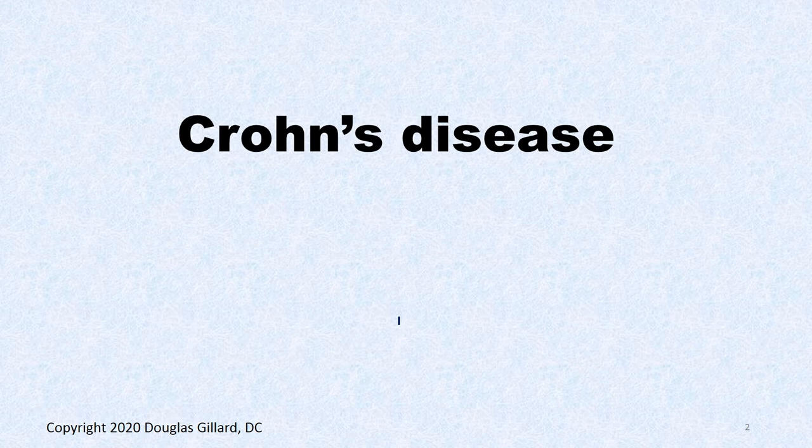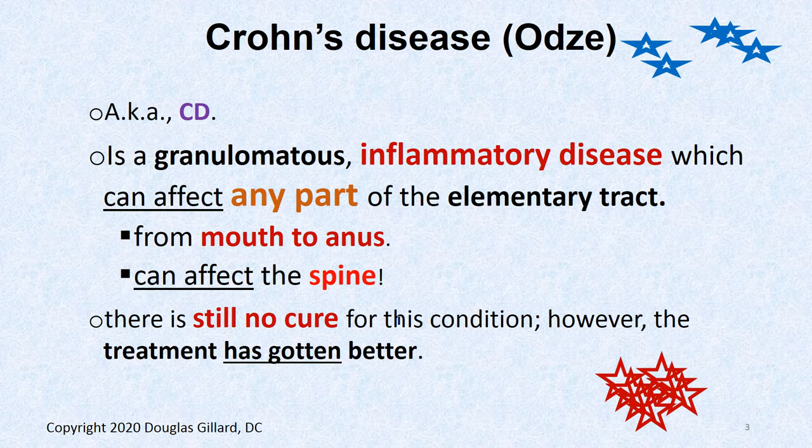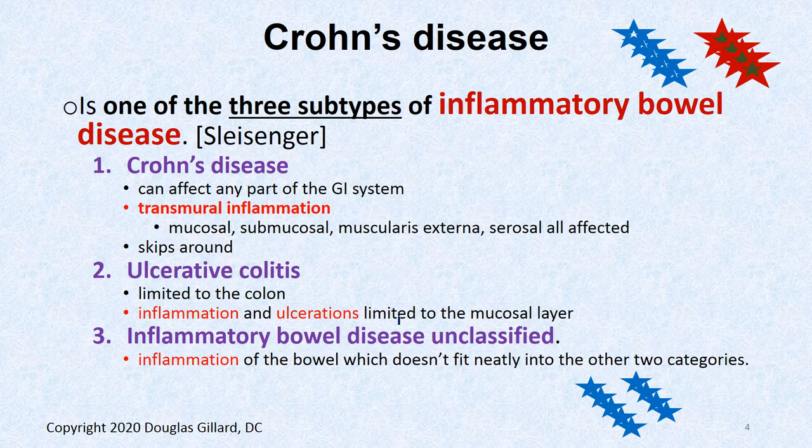We also have some ulcerative colitis. Crohn's disease, sometimes abbreviated CD, is a granulomatous inflammatory disease. It can start out with inflammation and then spawn into granulomas. It can affect any part of the alimentary canal from the mouth to the anus, and can even affect the spine. There is no cure, and we don't fully understand what causes it.